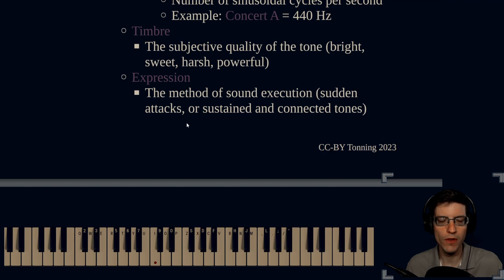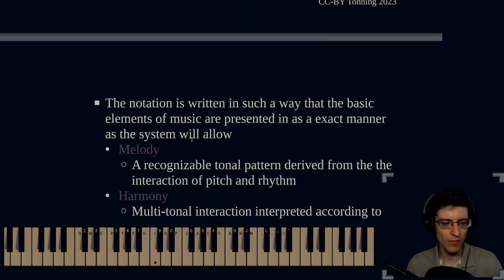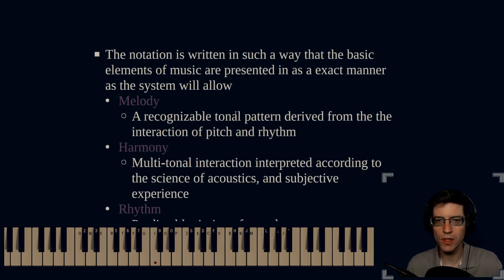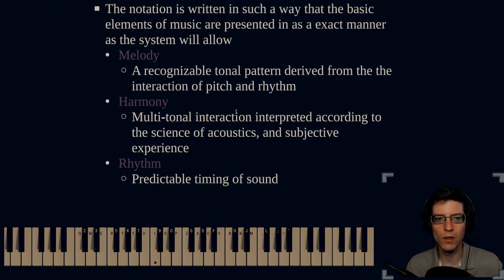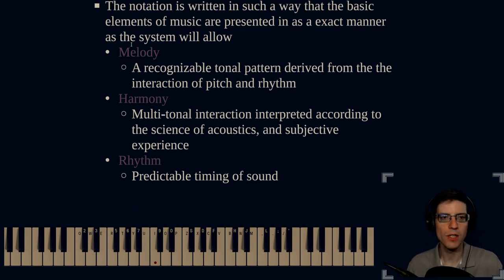Now, then we move into expression. This is the method of sound execution, whether it's sudden attacks or sustained and connected tones. The expression, the way that sound is executed. So, the notation is written in such a way that the basic elements of music are presented in as exact manner as the system will allow. Okay? And those elements include melody, harmony, and rhythm.